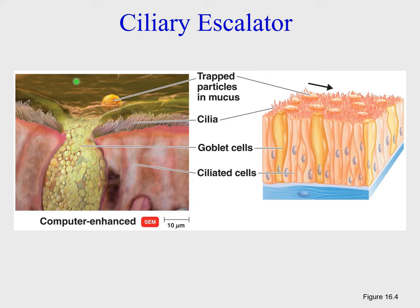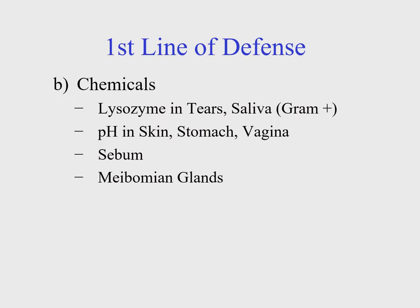These are close-up views of the ciliary escalator, also called the mucociliary escalator. This computer-enhanced picture shows real cells including goblet cells, which contract and secrete mucus onto the surface of mucous membranes, and cilia, which are fine structures that beat in unison to move along the mucus. The mucus traps microorganisms or foreign particles so they get swept along before binding to the mucous membranes themselves.